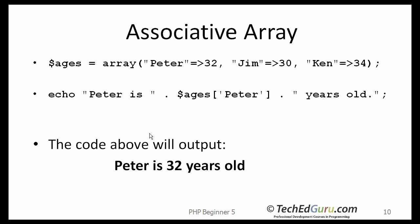Here is the associative array, and these are really very interesting. This type of array is not present in other programming languages like Java or C#. Here I am creating an array called ages, and my index values are not numeric — my index values are names. What I want to say is Peter's age is 32, Jim's age is 30, and Ken's age is 34. So in this case, the index is basically the name — this is called an associative array. Now, if I want to print Peter's age, I say ages with the index value Peter, and the result would be: Peter is 32 years old.